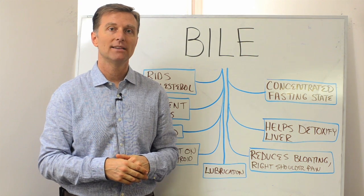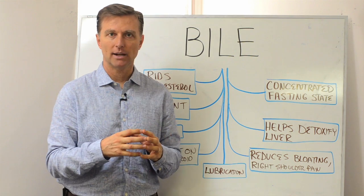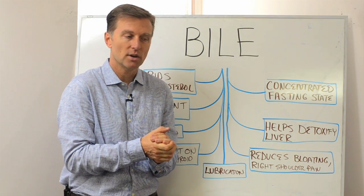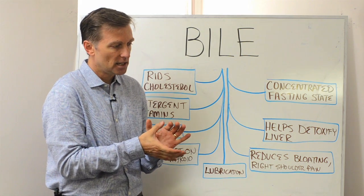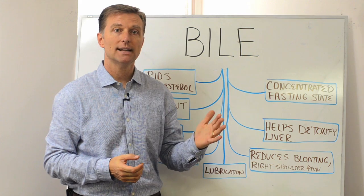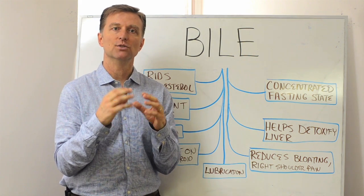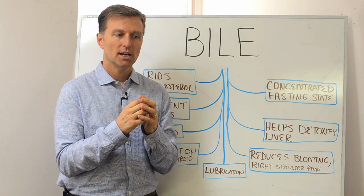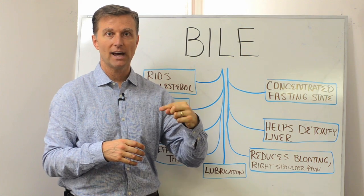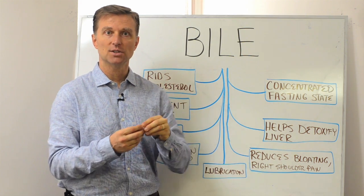Bile is made by the liver cells and it's concentrated in the gallbladder. So it sits and stores there and concentrates. Every time you eat, especially certain foods like fats, it contracts and squeezes out into the small intestine and actually breaks down large particles of fat into small particles of fat.